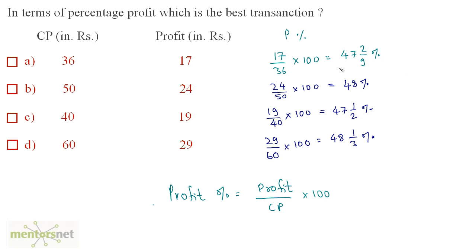So which of these percentages is the greatest? Option D is the greatest percentage at 48 1/3 percent. So this is the right answer.